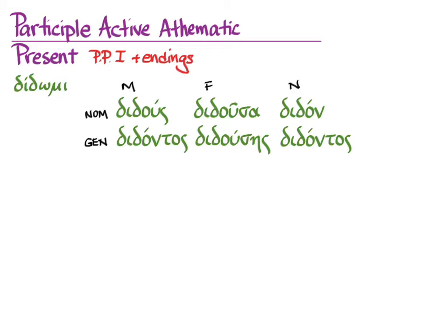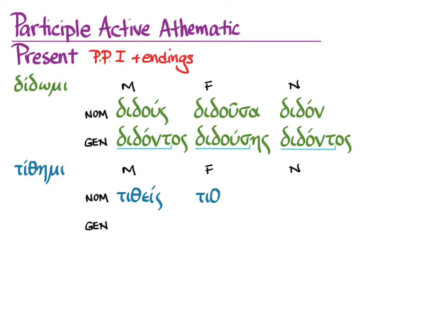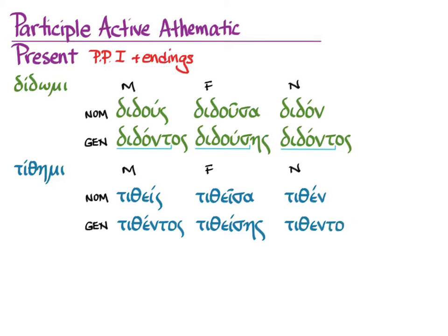For didomi's active participles in the present tense, you will use didont-, didous-, didont- in the third declension, the first declension, and the third declension, as you have done with stems for the participles since you first learned them. For tithemi, we get titheit, tithesa, tithen, tithentos, titheses, tithentos, which means that our stems are tithentos, titheses, tithentos. As you have learned with active participles from the beginning, it's third declension for the masculine, first declension for the feminine, and third declension for the neuter.